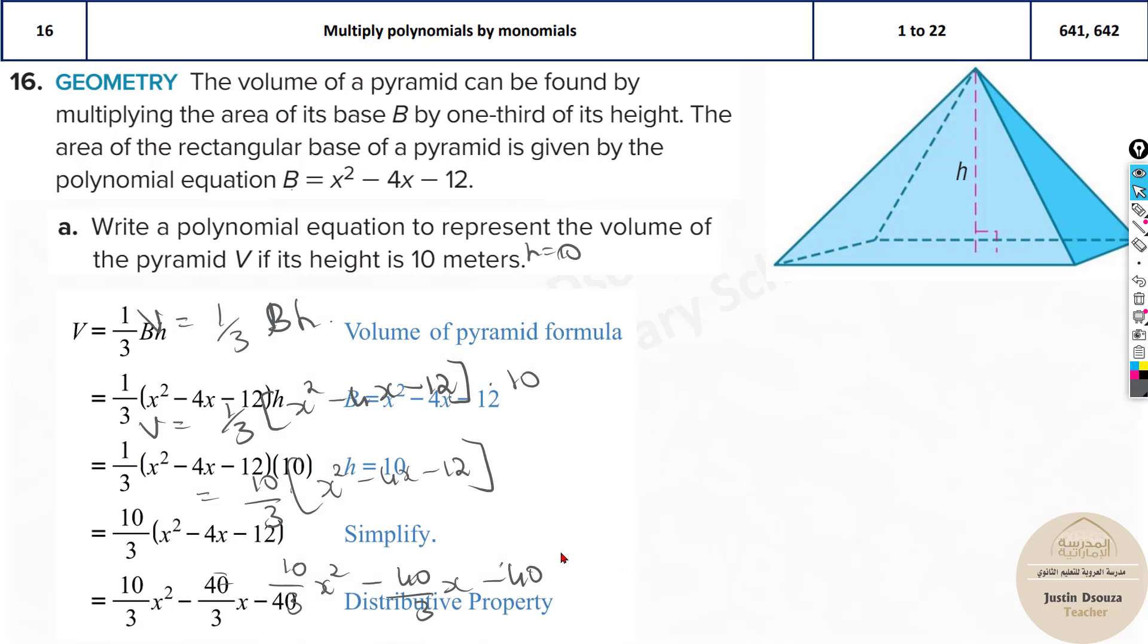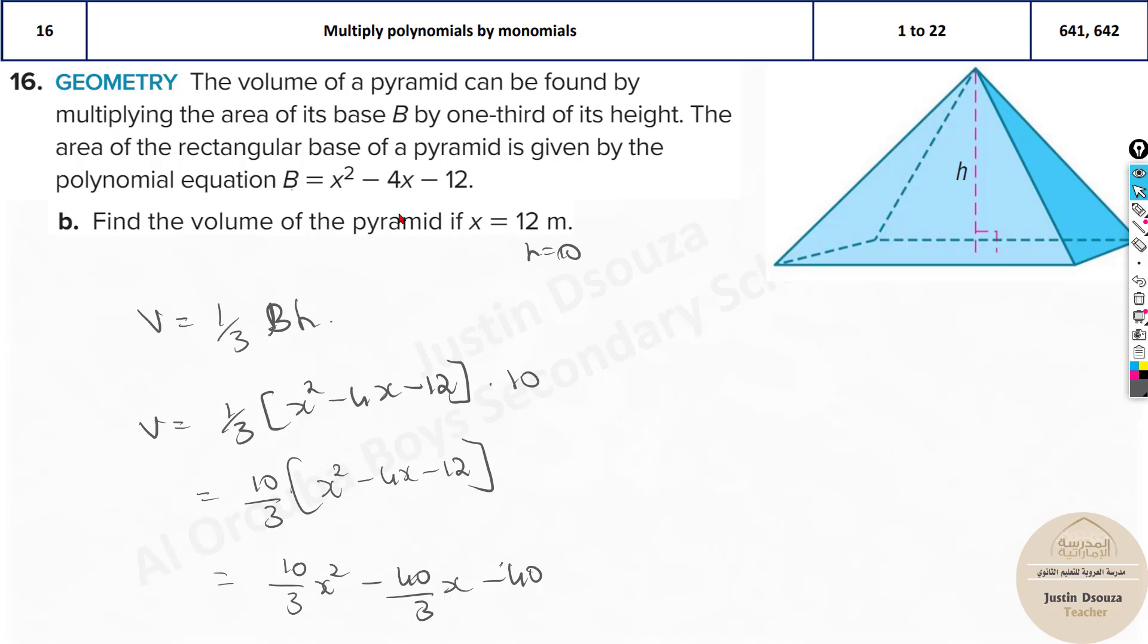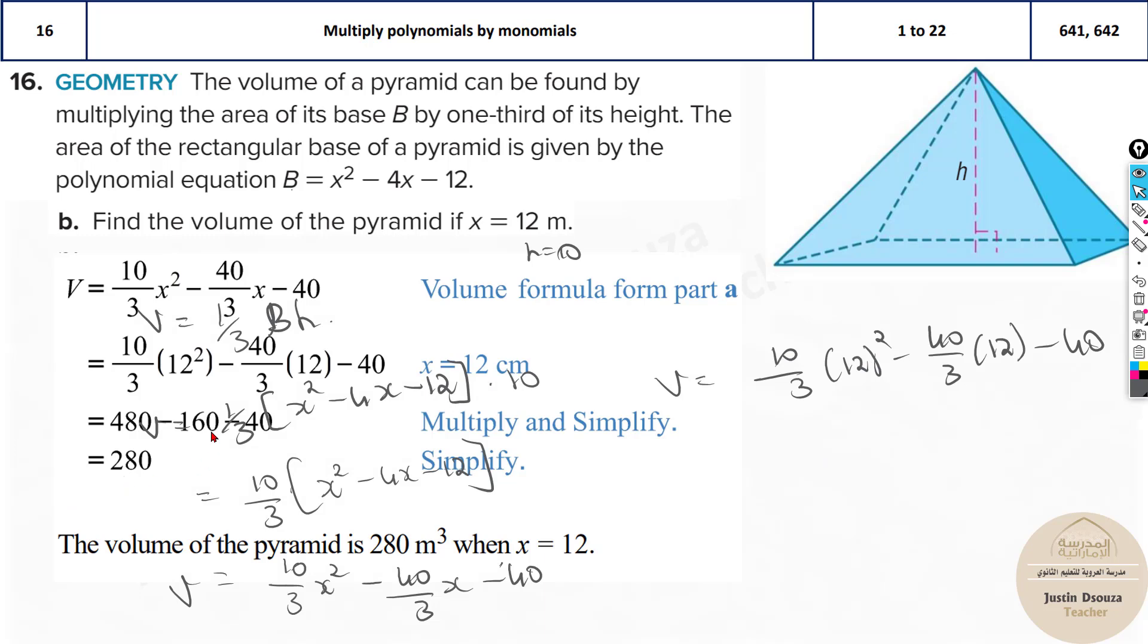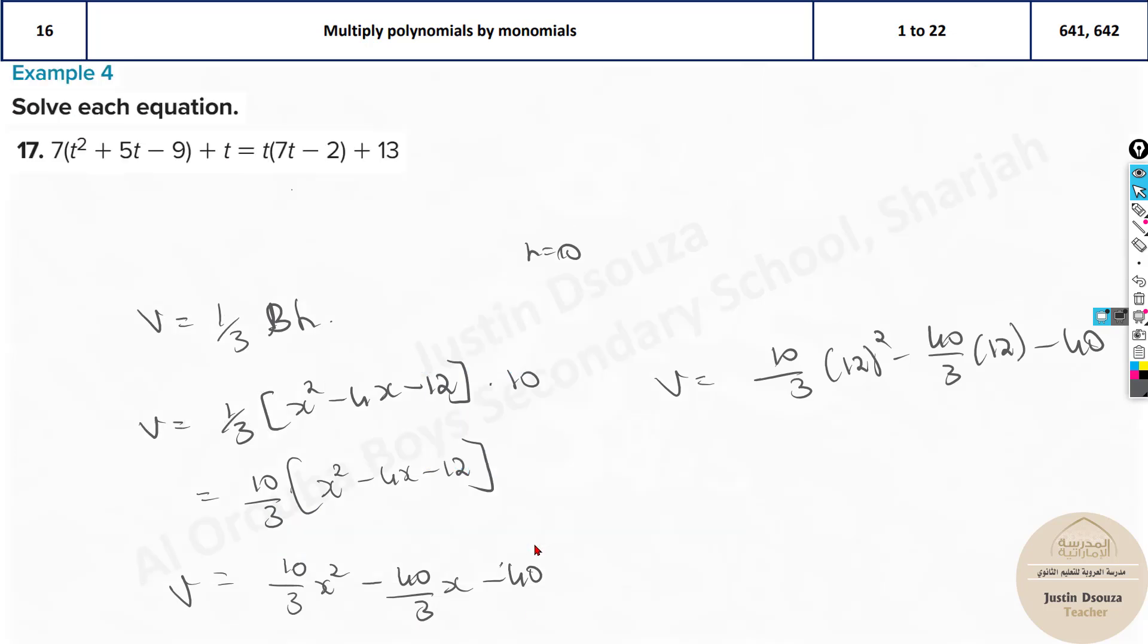Question B: they have told find the volume when X is 12. Wherever X is there in this particular volume equation, put 12. 10 by 3 times 12 squared minus 40 by 3 into 12 minus 40. You can use the calculator for this. The volume is 280. Or you can do it manually. 12 squared is 144 and then simplify. It's 280 meter cubed when X is 12.